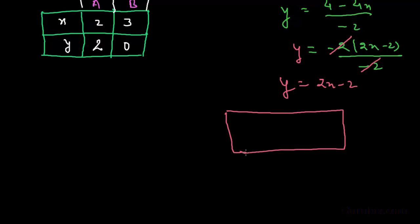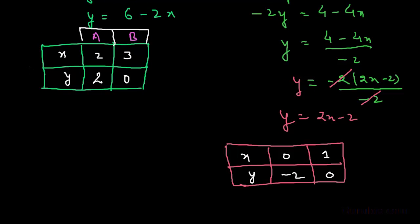We draw a table with two rows and three columns for equation 2. If x = 0, then y = −2; if x = 1, then y = 0. We label these points P (0, −2) and Q (1, 0).